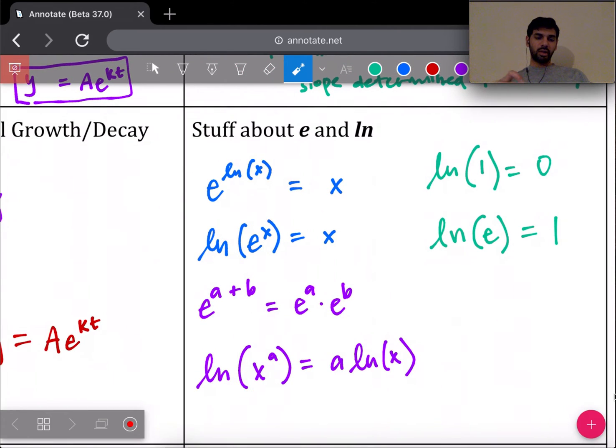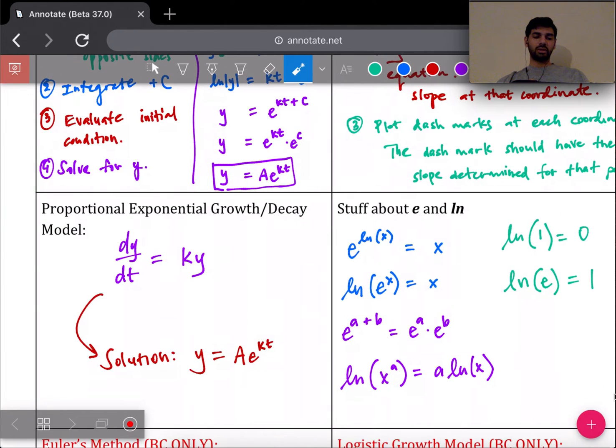In this box I put general stuff about e and natural log that people tend to forget. e^(ln x) is just x, and ln(e^x) is just x. e and natural log are inverses of each other. So if you ever get an equation that has natural log in it and you want to get rid of the natural log, apply an e to it as a base, and you'll just end up with whatever was inside of the natural log.